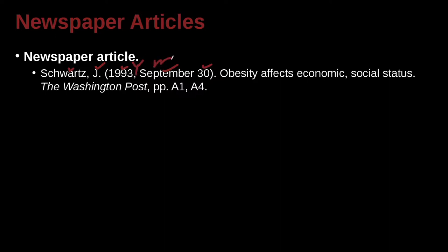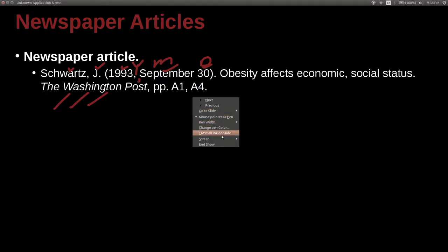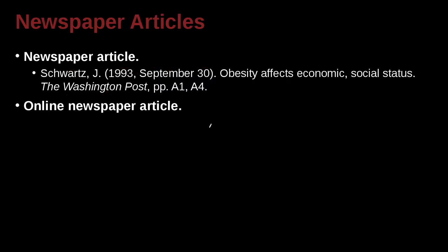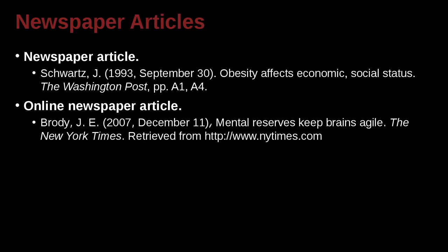So: year, month, day, and we've got a comma. 'Obesity Affects Economic Social Status' — that is the name of the article inside the newspaper. The newspaper's name is the Washington Post, and you can see it's in italics. PP means this is a page range, and they don't use regular page numbers — they have sections like A1 and A4. Each case is a little bit different, and you need to go to the APA guidelines to see exactly how it fits what you're quoting.